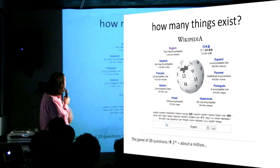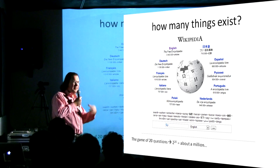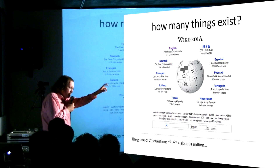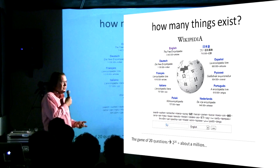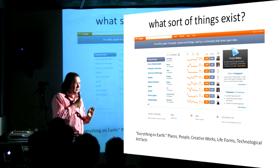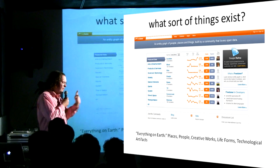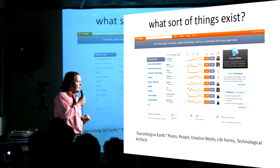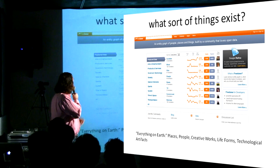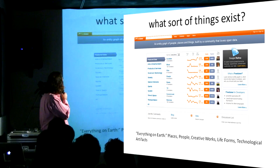I want to make this big, but the question is how big can I make it — how many things are there? There are about three and a half million things in Wikipedia. But the game of 20 questions says that with 20 questions you can select about a million topics that actually matter to people. This is Freebase, which is kind of like DBpedia but actually a little better, and you can see the really big categories: places, people, creative works like books and movies.